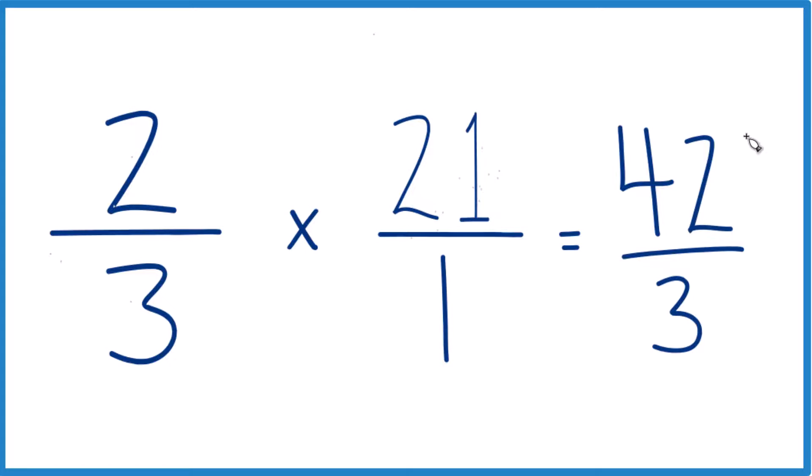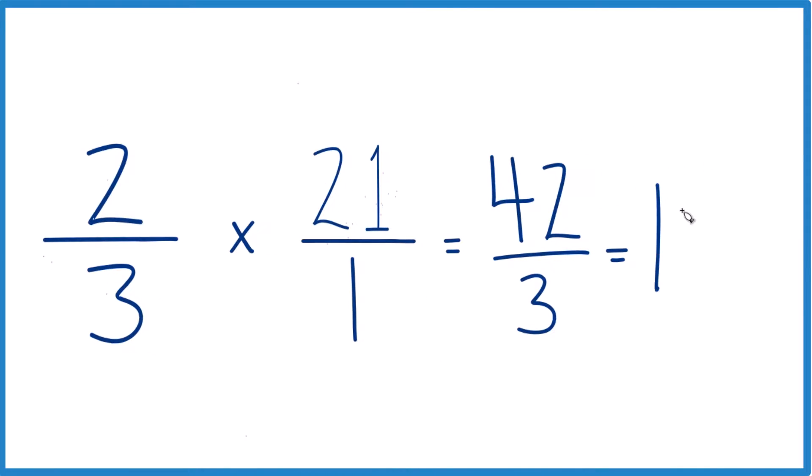This is an improper fraction, though, because 42, that's larger than 3. And it turns out 3 times, let's see, 3 times 14, that would give us 42.